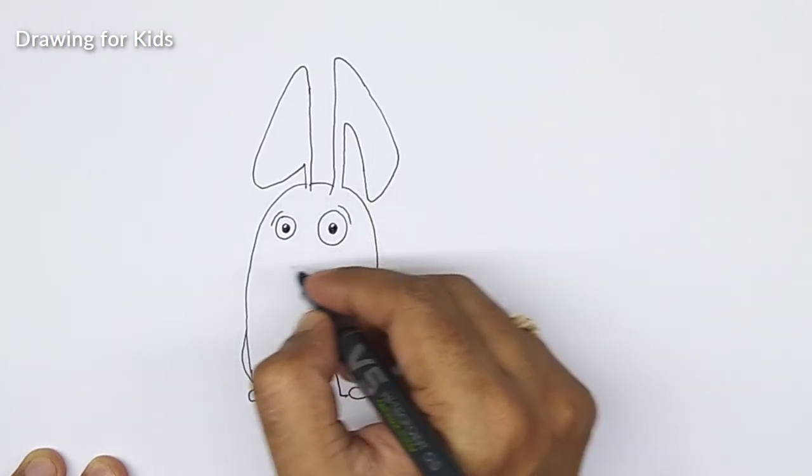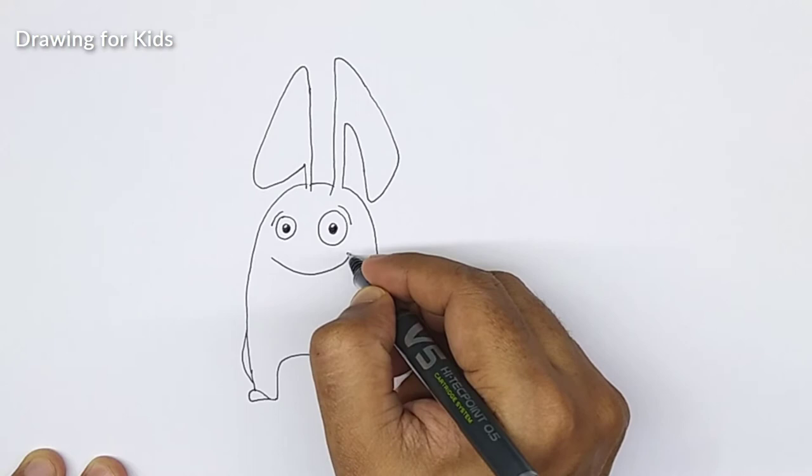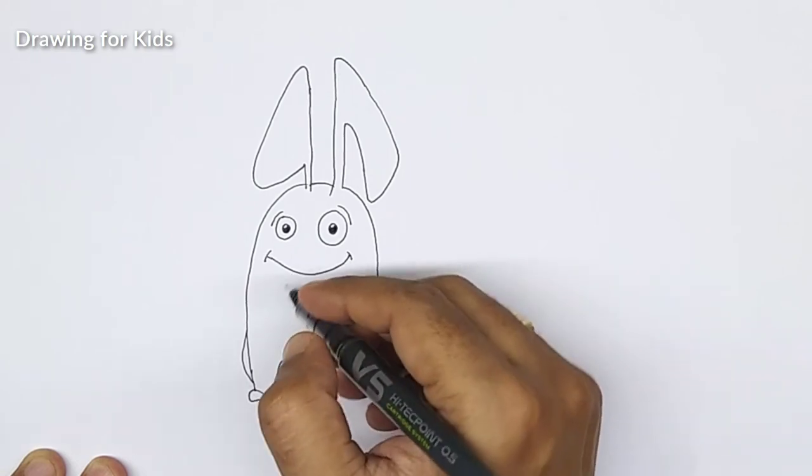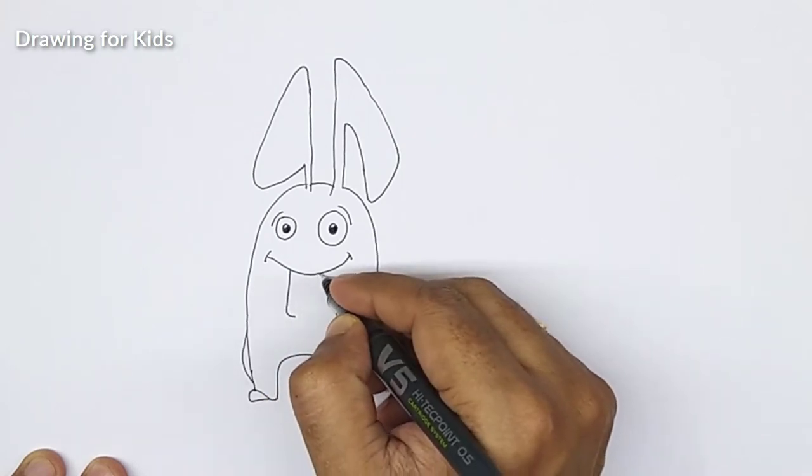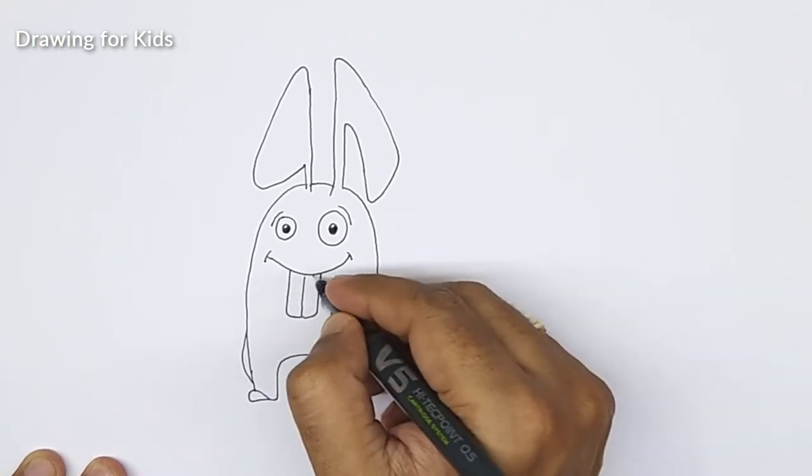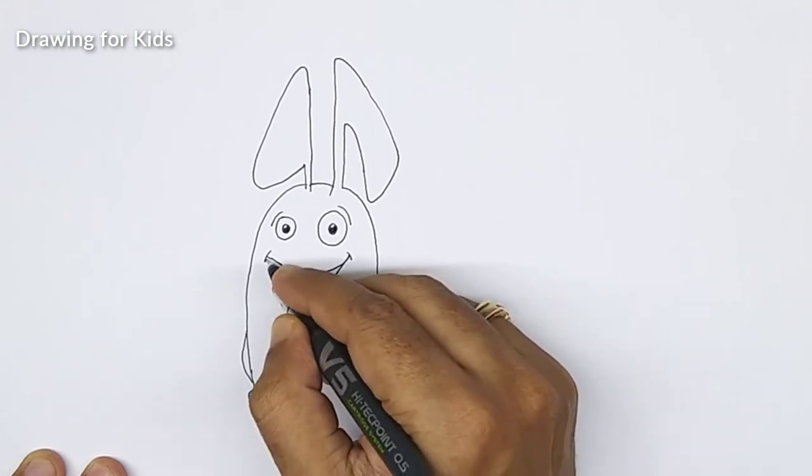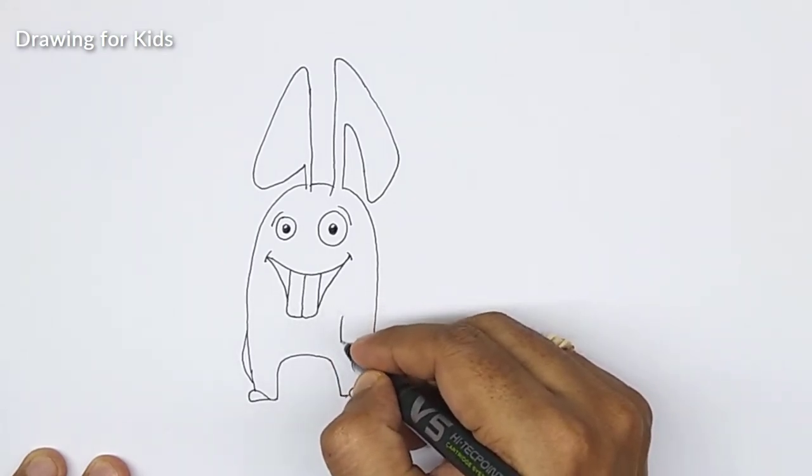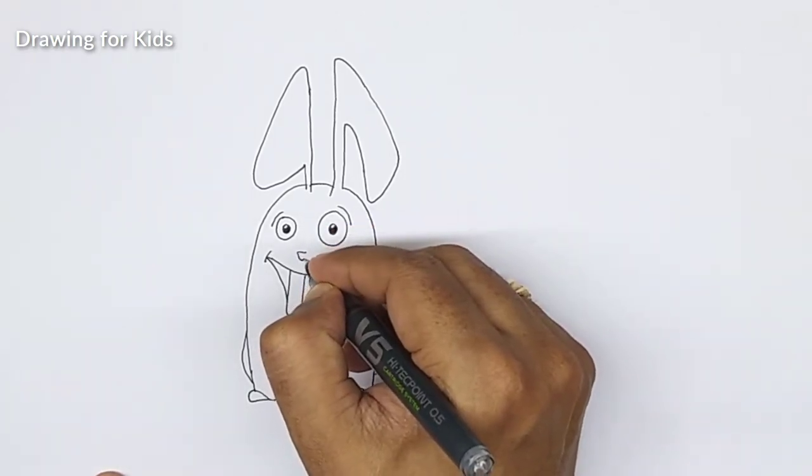Here we will make a super funny mouth. Great happy smiling and rabbit is supposed to have his teeth, long teeth, this one here like this and this we are connected here. It's funny right? And we'll make small kind of triangle as his nose.